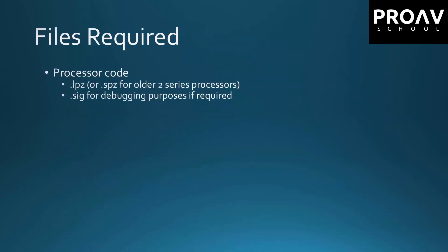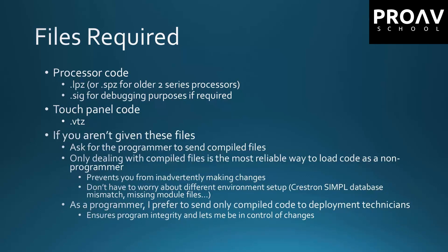The files that you're going to need: processor code is .LPZ, or .SPZ if it's an older processor. There's also the SIG file for debugging purposes if the programmer needs you to do some debugging. Touch panel code that you'll be loading is .VTZ. If you aren't given these files, sometimes a programmer that hasn't worked with a lot of remote people loading code might be tempted to give you the source code. I prefer to send the compiled code because it ensures that the program hasn't been changed or modified by accident or by the environment being different. Only dealing with compiled files is the most reliable way to load code as a non-programmer.